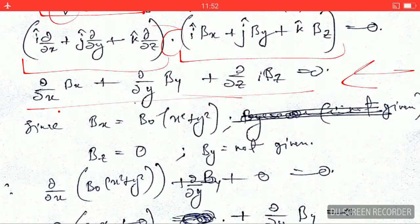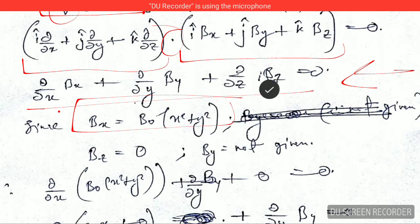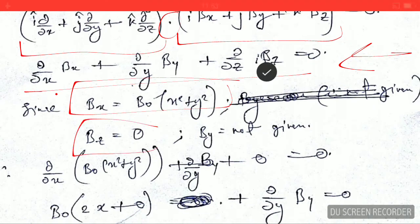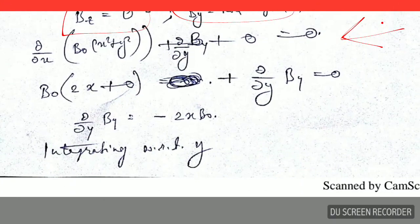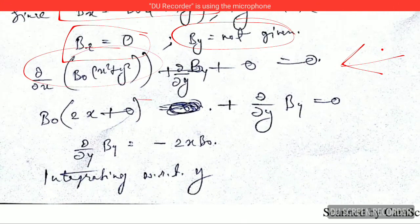Now what I am going to do is that this was given in the question and this is also given in the question, but By was not given. So I will take it as it is. On substituting the values I arrive at this equation.